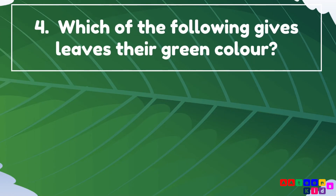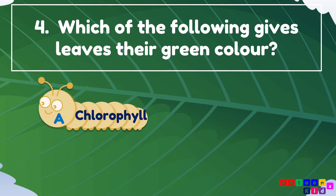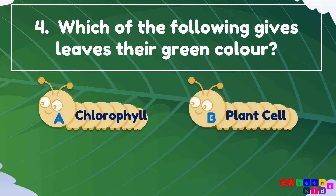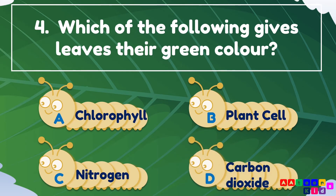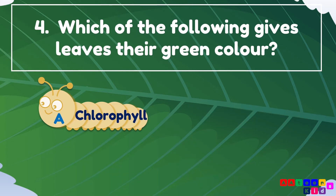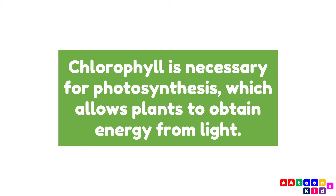Which of the following gives leaves their green color? Chlorophyll, plant cells, nitrogen, or carbon dioxide? The answer is chlorophyll. Chlorophyll is necessary for photosynthesis, which allows plants to obtain energy from light.